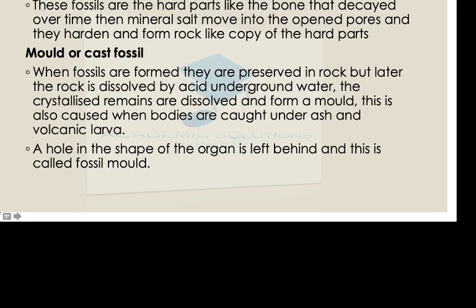We also have mineralization body fossils, where hard parts such as bone have decayed over time and mineral salts move into the open pores. These harden and form a rock-like copy of the hard part. Remember, we are looking at how fossils are formed, so all of this explains how we get different fossil types.